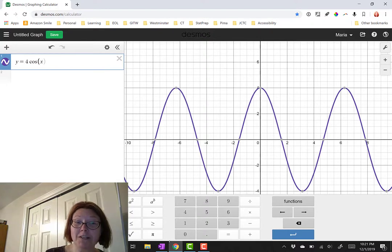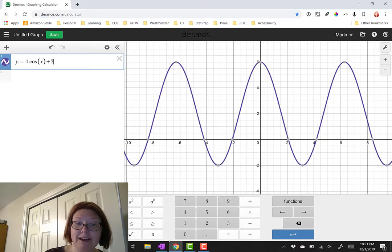So it's 4 cosine left paren x right paren and then plus 2 on the outside of that. So this is a lovely periodic function.